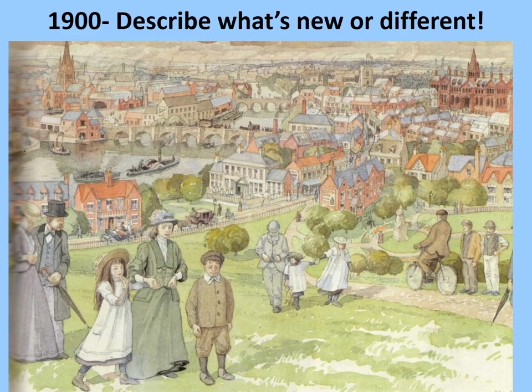Now let's have a look at this next scene — what the scene might have looked like by 1900. You might notice some things that stayed the same and some that are different, but it is supposed to show the same town. This is not based upon a real place, but it's designed to give us an impression of how places might have changed. Note down some of the things that have stayed the same, but in particular describe what's new or different. Spend a good five minutes doing that.